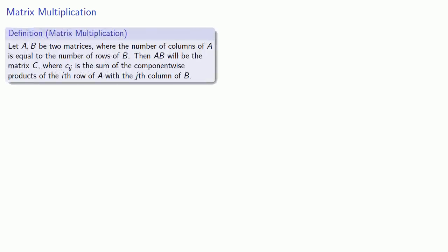Suppose I have two matrices A and B, where the number of columns of A is equal to the number of rows of B. Then the matrix AB will be the matrix C, where the entry C_ij is the sum of the component-wise products of the i-th row of A with the j-th column of B.